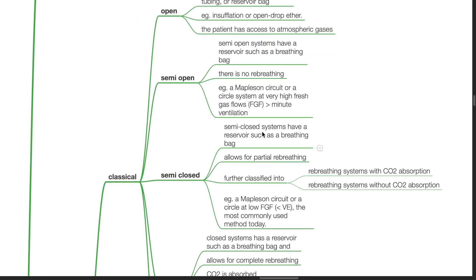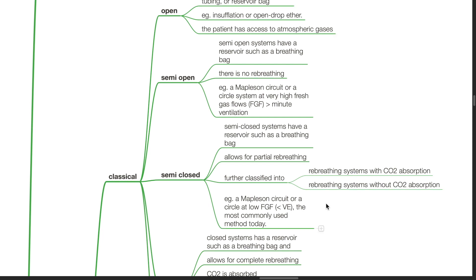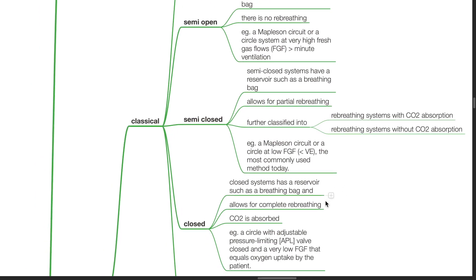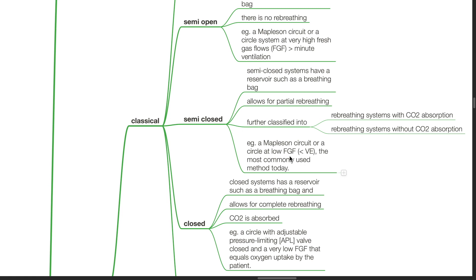Semi-closed systems have a reservoir such as a breathing bag and allows partial re-breathing. It is further classified into re-breathing systems with CO2 absorption and re-breathing systems without CO2 absorption. For example, a Mapleson circuit or a circle system at low fresh gas flow, the most commonly used method today.